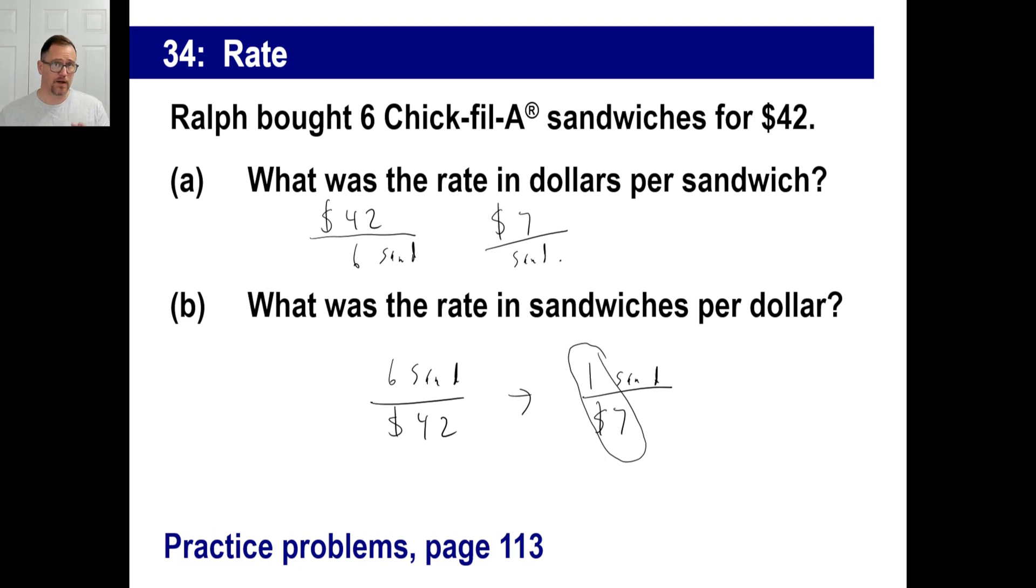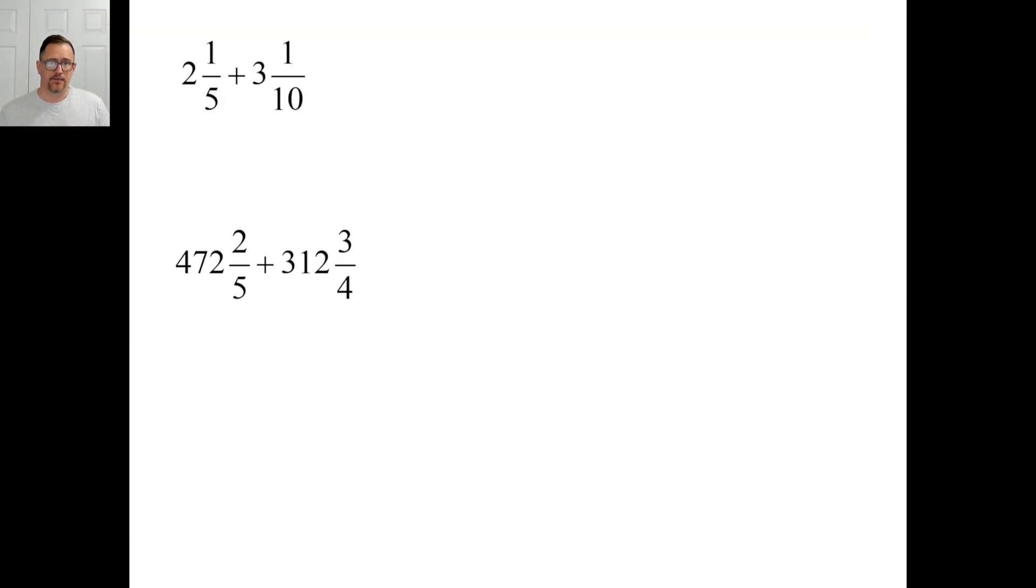Go to page 113. Give those a whirl and see what you do. Pause it and try A. I think the easiest way probably to do A is to just find a common denominator, which is 10, and add those two. So, 2 and 3 make 5. 1/5 is the same thing as 2/10, plus 1/10 is 3/10. Piece of cake.